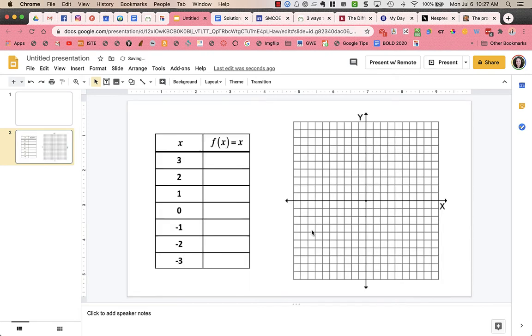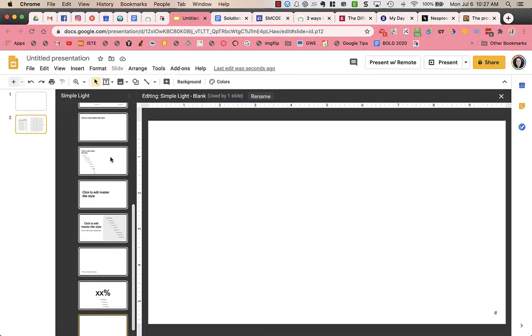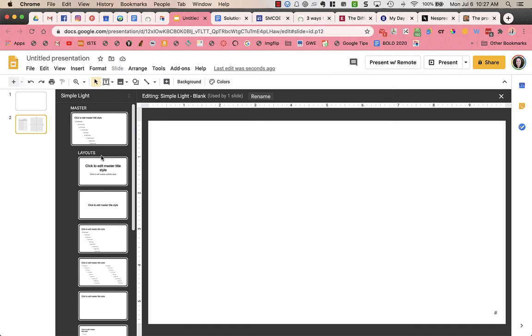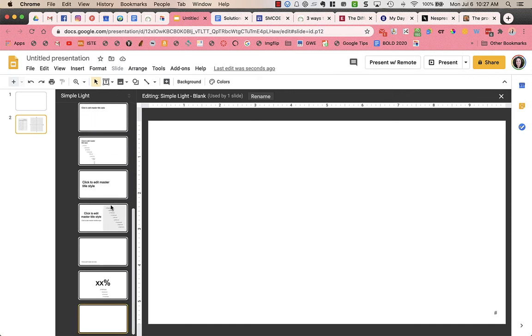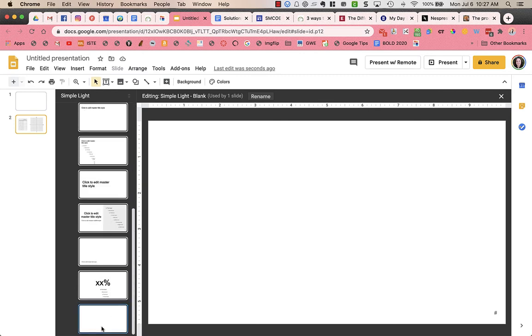So what I'm going to do next is I'm actually going to go into Slide and Edit Master. This allows me to edit each of the different layouts that are available in my slides. What I like to do is go down to the blank slide down at the very bottom, and you can see it's titled Blank when I click on it.